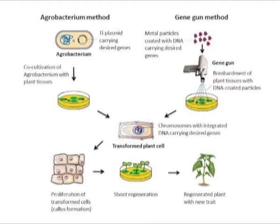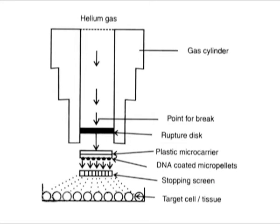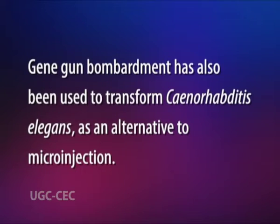Gene guns have also been used to deliver DNA vaccines. The gene gun has become a common tool for labeling subsets of cells in cultured tissues. In addition to being able to transfect cells with DNA plasmids coding for fluorescent proteins, the gene gun can be adapted to deliver a wide variety of vital dyes to the cell. Gene gun bombardment has also been used to transform Caenorhabditis elegans as an alternative to microinjection.